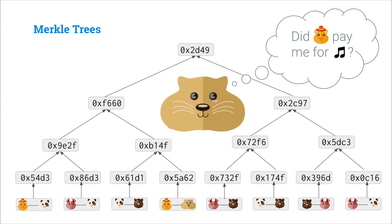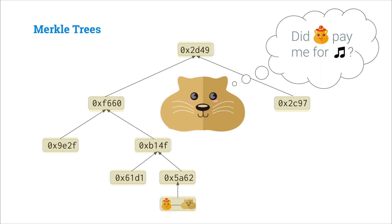Well, let's think about our buddy Tan Gerbil. In order to verify that Alice's transaction to her is valid, rather than having to hash thousands of transactions together, all she needs is to hash Alice's transaction, hash it together with its neighboring hash, hash that resulting hash with its neighboring hash, and so on all the way until we get to the Merkle root. This small set of hashes that allows Tan Gerbil to verify that the transaction is valid is called a Merkle proof, or a Merkle branch.